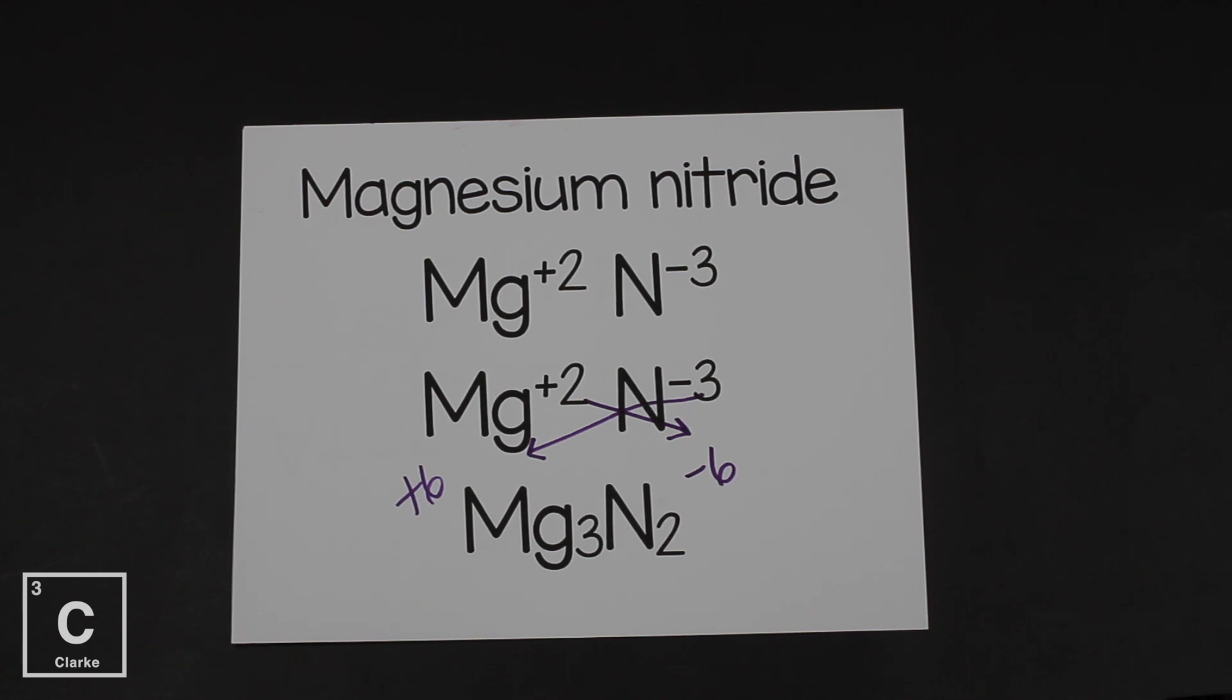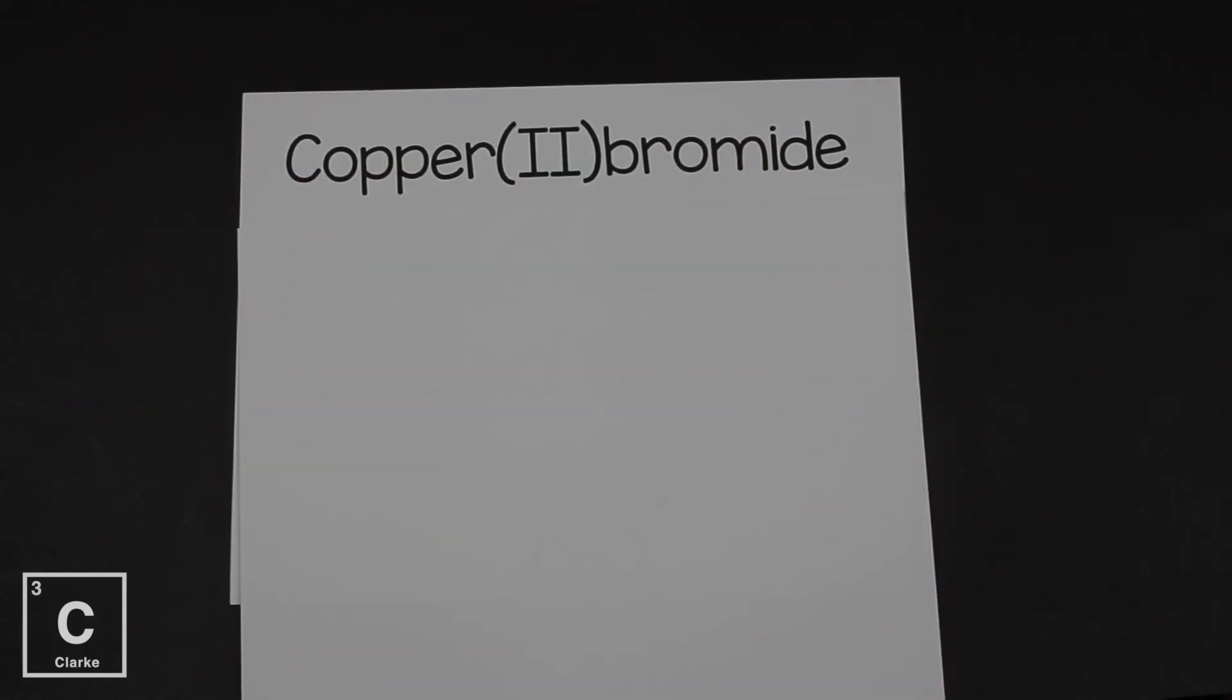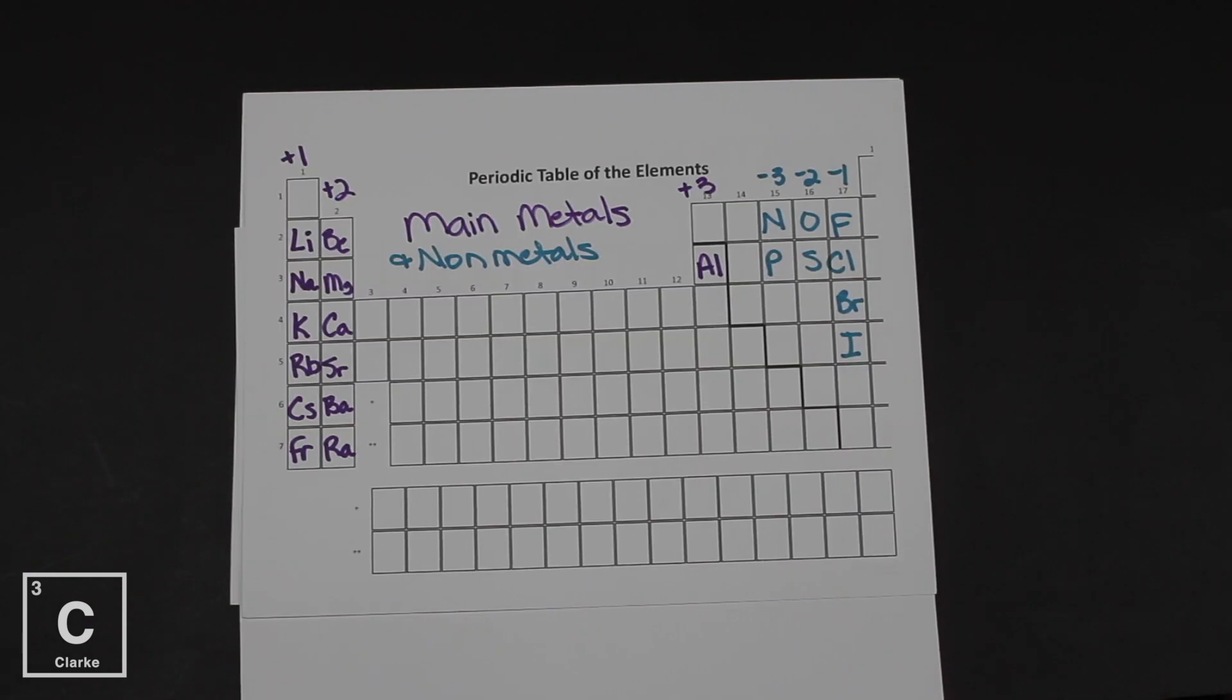This shortcut always works. Only if you reduce it down to the lowest whole number ratio. Three and two, it doesn't reduce down past that. Now this shortcut stays true even for transition metals. So let's look at this example. Copper two bromide. Now remember the roman numeral two, that tells us what the oxidation number of copper is because copper is a transition metal.